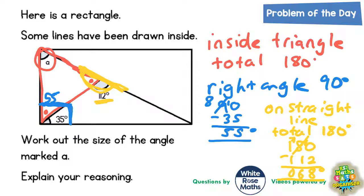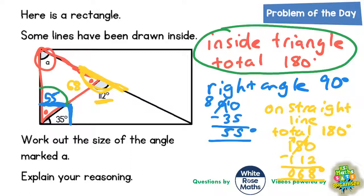So the other angle marked with a red dot must be 68 degrees. And now we're almost there because we said a few minutes ago that angles inside the triangle total 180. Well now we can focus on the red triangle. We've got 55 degrees in the bottom corner and 68 degrees in the other corner.